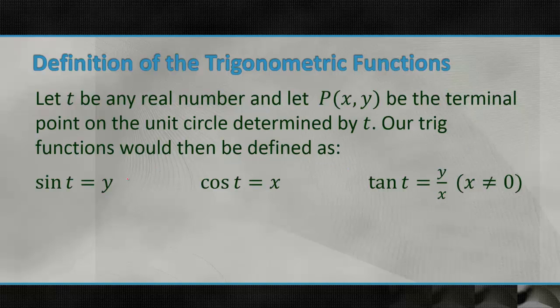You may have seen your points labeled like this on the Kahoot today. Basically, cosine is your x value and sine is your y value. And then, of course, tangent is your y over your x, based on the unit circle and the way triangles they form, as we kind of saw a little bit today.